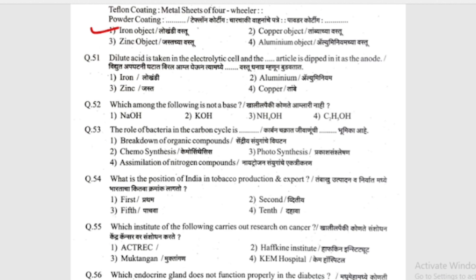Dilute acid is taken in the electrolytic cell and what article is dipped in it as the anode? (Vidyut apagatini ghatat viral amla gheon, tiyamadhe timba timba vashtu dhanagram hoonun budhavta.) Options: iron (lohkhandi), aluminium, zinc (jastha), or copper (tambya). The answer is copper (tambya).